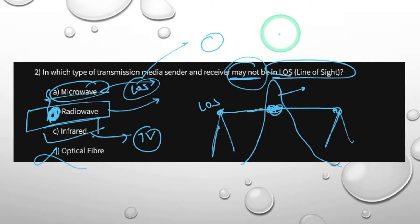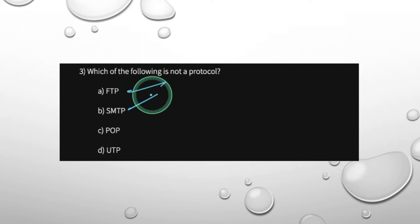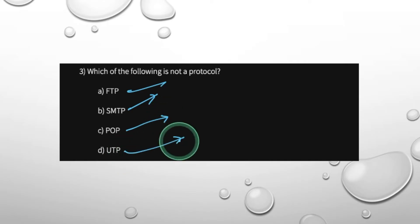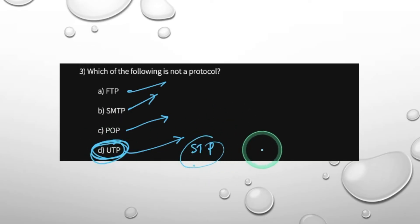Which of the following is not a protocol? FTP is File Transfer Protocol. SMTP is Simple Mail Transfer Protocol. POP is Post Office Protocol. UTP is called Unshielded Twisted Pair — that is a cable, not a protocol. STP is Shielded Twisted Pair. So UTP is not a protocol.